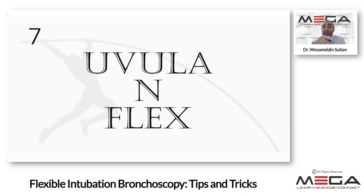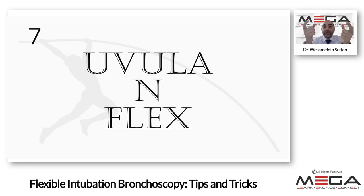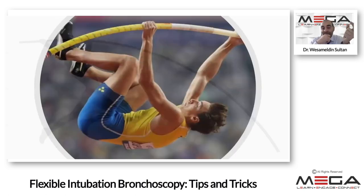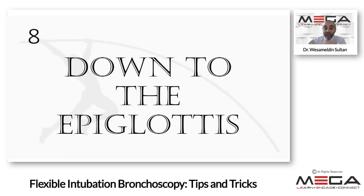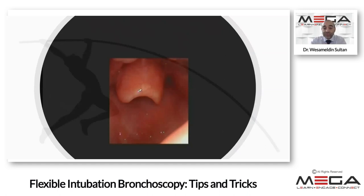While advancing, once you see the uvula, start to flex the tip of the bronchoscope. The uvula is our first target. Once you see it, start to flex the bronchoscope slightly, and you will see the epiglottis. This is the relation to the pole vault jumper — the player starts by flexing the stick as they push off. Once after flexion you see the epiglottis, start to move down past it very slowly.